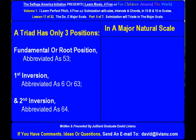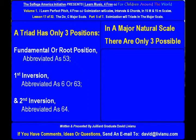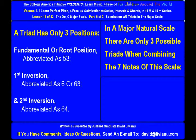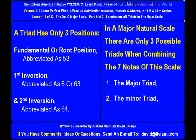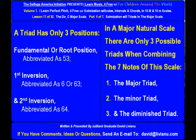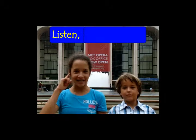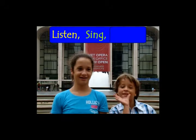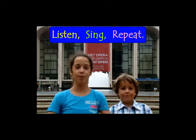In a major natural scale there are only three possible triads when combining the seven notes of this scale: the major triad, the minor triad, and the diminished triad. Understand, then sing, repeat.